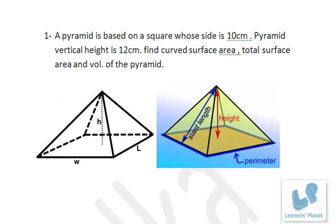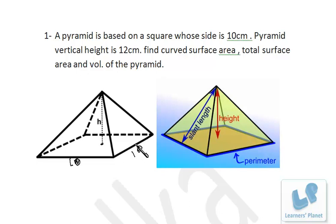A pyramid is based on a square whose side is 10 cm and the pyramid's vertical height is 12 cm. Find the curved surface area, total surface area, and volume of the pyramid. The base is square, so W and L are both 10. The midpoint splits the width: from midpoint to edge is 5. Using Pythagoras theorem with height 12 and base half 5, we get a Pythagorean triplet 5, 12, 13 — so the slant height is 13.